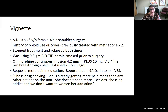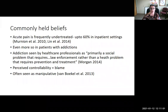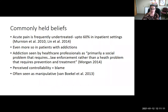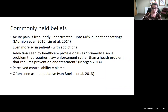Someone from the floor comes to you and says, 'She's drug seeking. She's already getting more pain meds than any other patient on the unit, doesn't need more, and she's an addict — we don't want to worsen her addiction.' This is a scenario that can occur on the hospital ward in patients who have co-occurring pain and substance use disorder. Some commonly held beliefs contribute to this: acute pain is frequently undertreated in up to 60% of inpatient settings, and we see this even more in patients who have substance use disorder. It is in part because healthcare professionals often view it as primarily a social problem requiring law enforcement rather than a health problem requiring prevention and treatment.